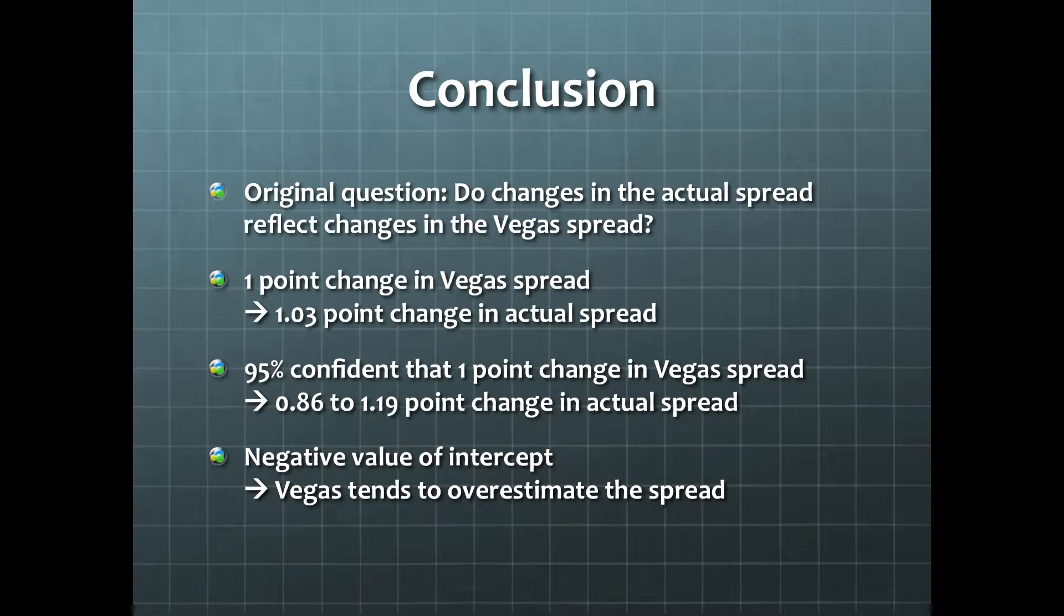Remember our original question. Do changes in the actual spread reflect changes in the Vegas spread? Although we got a very low R-squared value, the parameter estimates beta0 and beta1 can still be useful. The slope tells us that for a 1-point change in the Vegas spread, we expect a 1.03-point change in the actual spread.